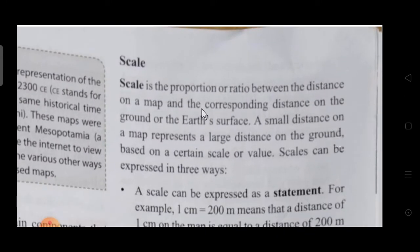Scale is the proportion or ratio between the distance on a map and the corresponding distance on the ground or earth's surface. For example, if you want to go from Morbi to Ahmedabad, it will be approximately 120 kilometers. We can't draw 120 kilometers on the map, so we use scale. A small distance on a map represents a larger distance on the ground based on a certain scale value.